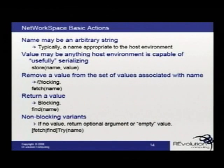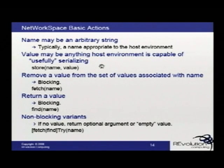We have a few basic actions: storing, fetching, or finding. With storing, the name can be any arbitrary string — just something appropriate you can understand. The value can be anything the host environment is able to serialize — data, functions, handles to applications. As long as the host environment can serialize that object, you can pass it. We can remove that value from the workspace by doing a fetch — this is a blocking operation. We can return the value with a find — also a blocking operation. We have non-blocking variants using try, such as fetch-try and find-try, which just return an empty value or an optional argument if the value doesn't exist.